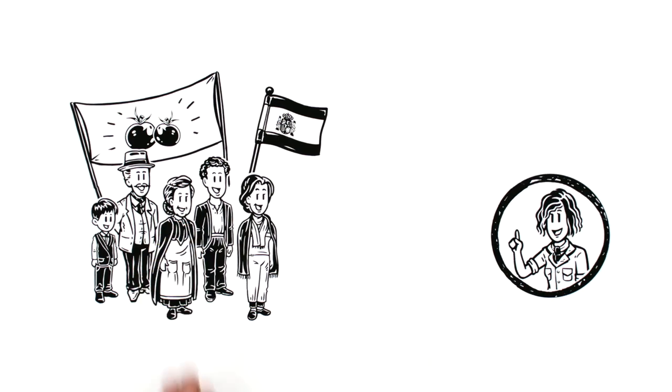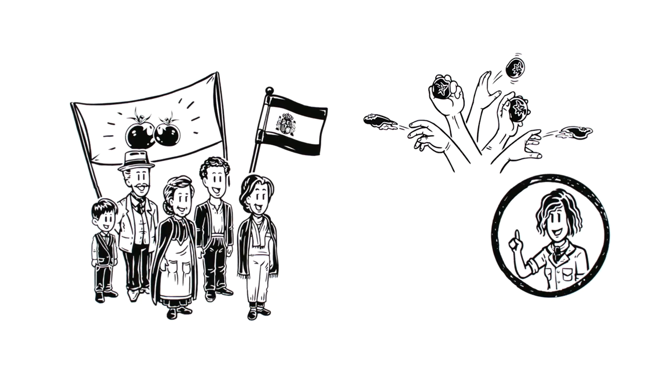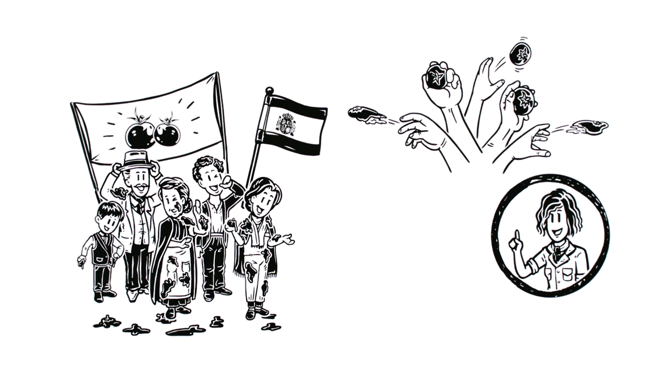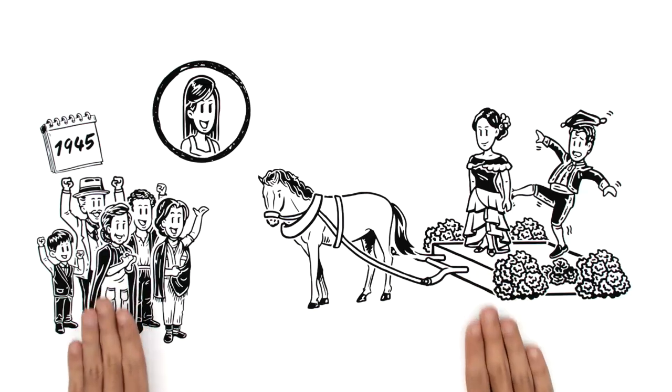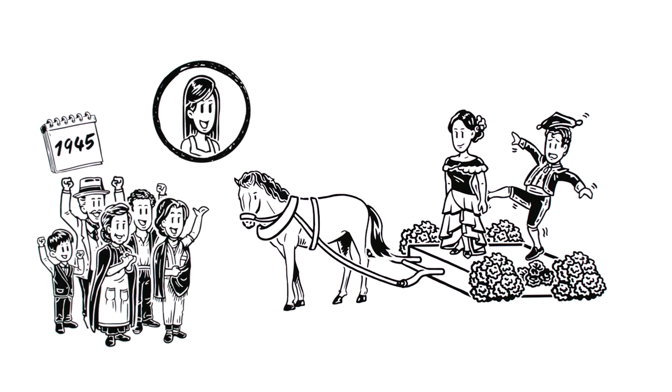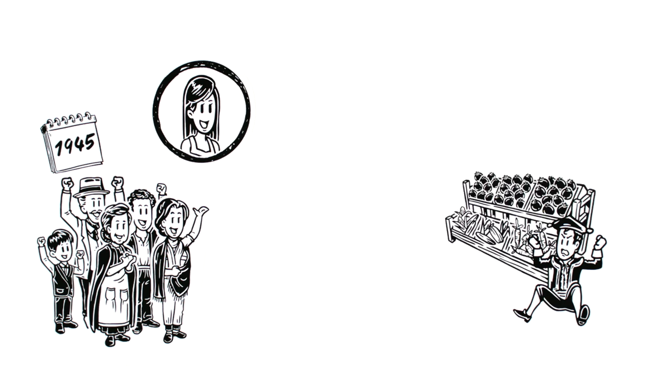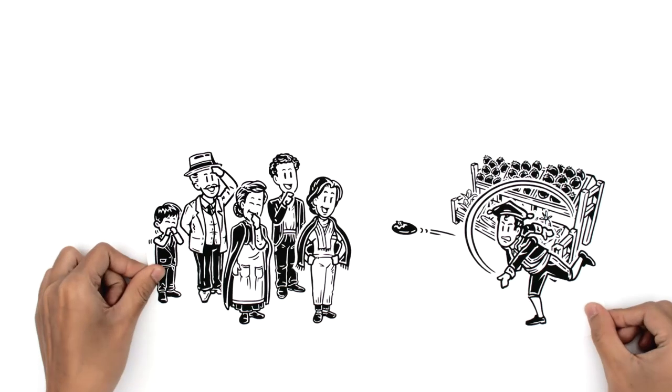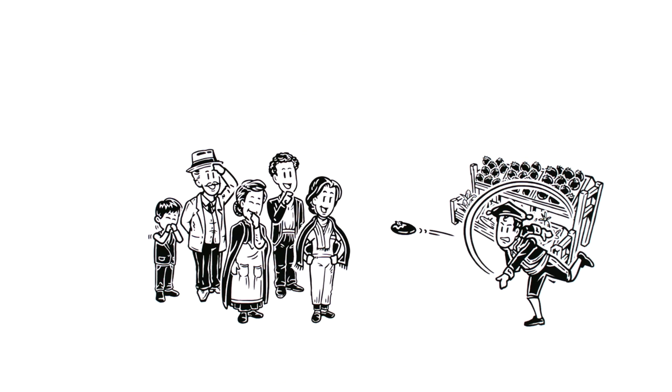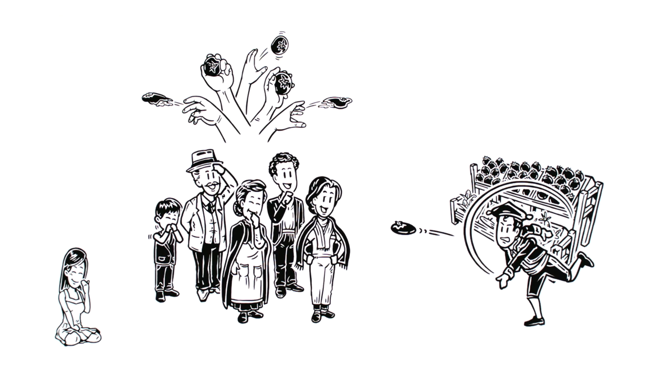She says the La Tomatina Festival in Spain has the entire town engaging in a giant tomato fight. It all began in 1945, when a participant fell off a float during a local parade. He landed next to a produce stand and was so furious, he started pelting the crowd with vegetables. From that day, La Tomatina was born. Cat thinks this sounds like a blast.